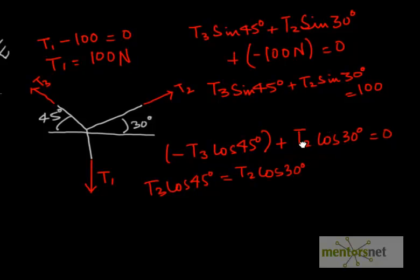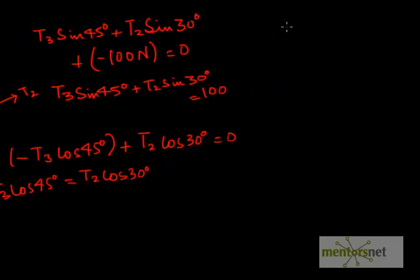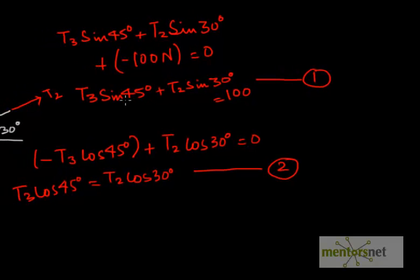Now we have two equations and two variables. The first equation is this one. The second equation is this one. We know the value of sin 45 degrees, sin 30 degrees, cos 45 degrees, cos 30 degrees. And the unknowns are T3, T2, T3, T2. And since there are two unknowns and two equations, we can solve for T3 and T2.